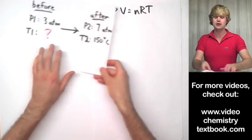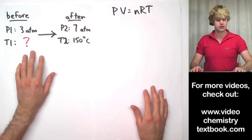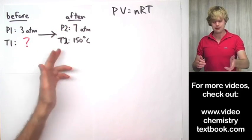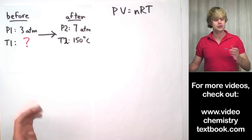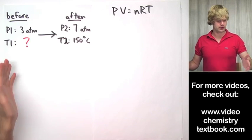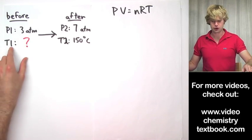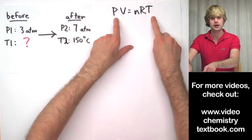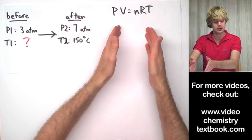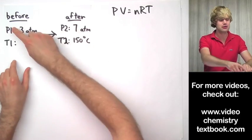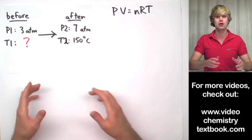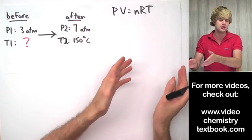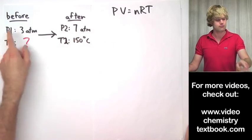So let's say that you're given a problem like this. We have a before and after, we have pressure and temperature are both changing. So we look at the variables we're dealing with, as I just said, pressure and temperature. And what I want to do is I want to take PV equals nRT, the ideal gas law, and rearrange it so that the variables I'm interested in, pressure and temperature, are by themselves on one side of the equation.